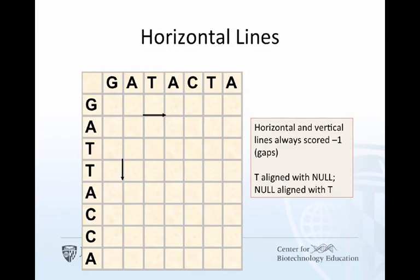Here's what's not so intuitive, and something I want you to discuss in the discussion forum. Horizontal and vertical lines always score minus one because they are gaps. The horizontal line T aligns between the G and the A on the left sequence. And in the vertical line, the T in the left sequence is between the G and the A. So you put a gap between the G and the A in the top sequence.